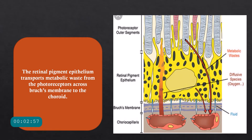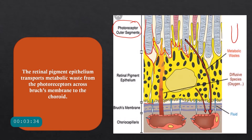The RPE is a very important and metabolically active structure. These cells have villus-like projections and are in close contact with the photoreceptors — the rods and cones. A very important function of the RPE is to take the waste products from the photoreceptors, whose discs are shed periodically, and transport them across the Bruch's membrane towards the choroid.